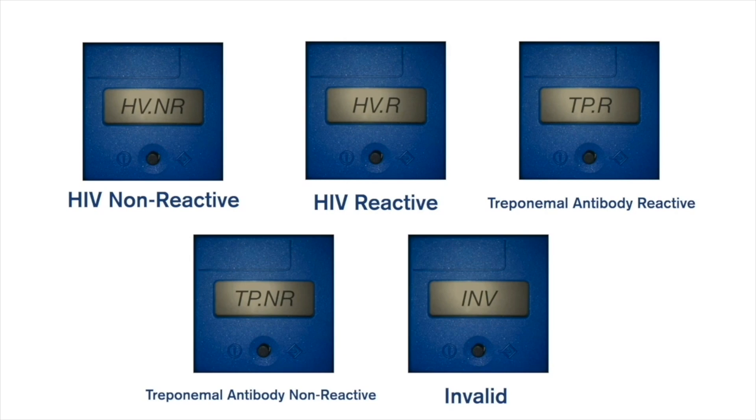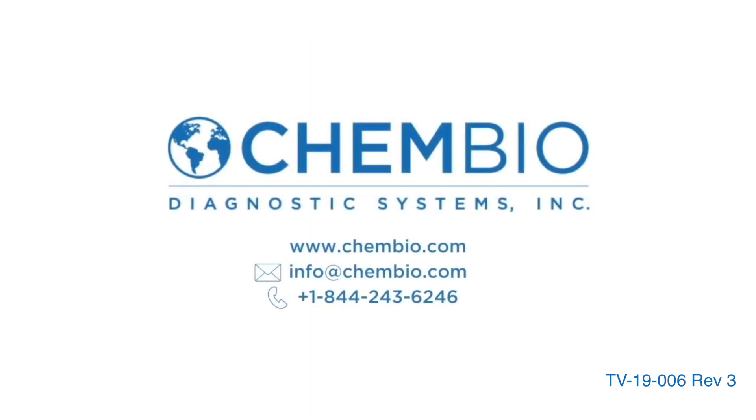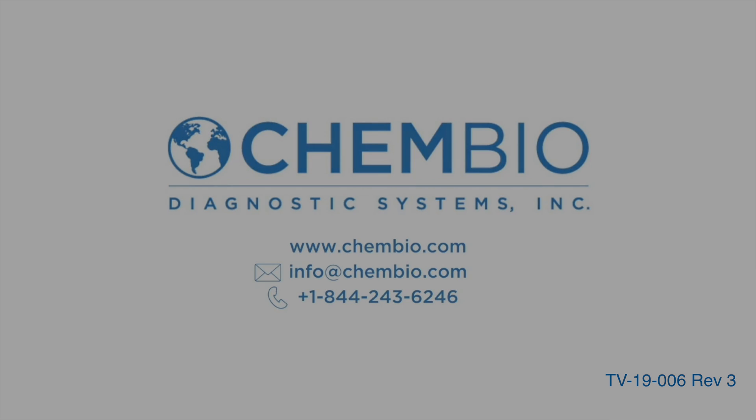In cases of invalid results, the test should be performed again with a new device. Thank you for choosing the ChemBio DPP HIV syphilis test. For orders or support, please contact us at 1-844-CHEMBIO. That's 1-844-243-6246 or through our website at www.chembio.com.